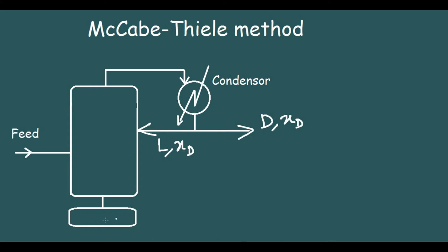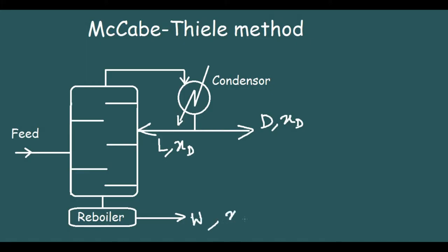This bottom part is known as the reboiler. The bottoms from the reboiler is named W, and the composition of this is XW. Various stages are required to conduct this distillation. Remember, the reboiler is also considered an ideal stage.